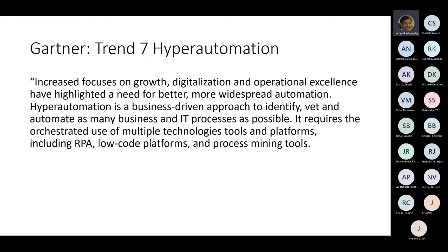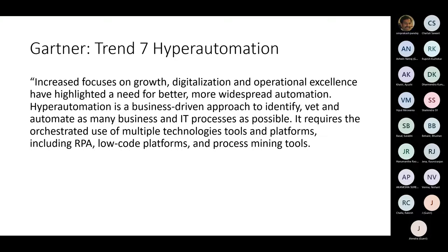Is hyper automation relevant and is there industry acceptance? My answer is yes. If you see Gartner's trend for 2022, trend number seven is about hyper automation. It clearly talks about how as organizations grow and have to compete, they will have to focus on digitization and operational excellence, and the way to achieve it is through automation.